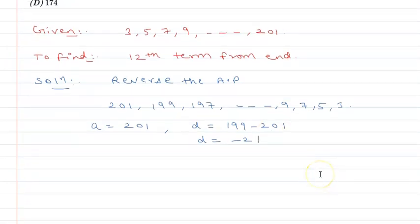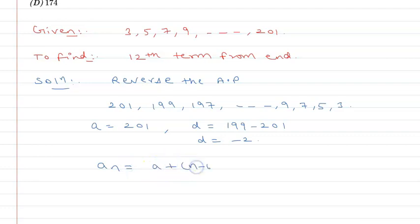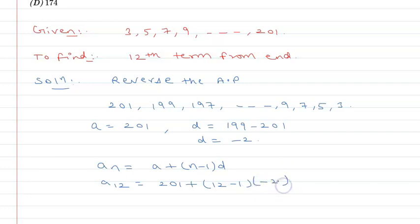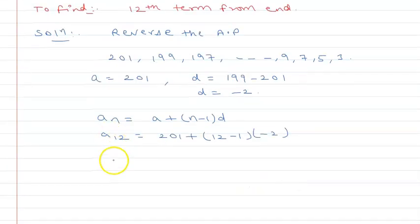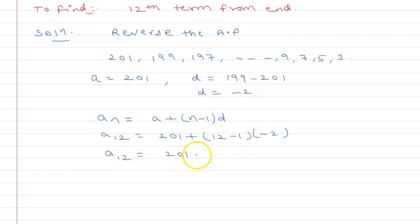I know that the nth term formula is A plus (n minus 1) into D. So the 12th term will be: A plus (12 minus 1) into D. That is 201 plus 11 into minus 2, which equals 201 minus 22. So A₁₂ will be 179.